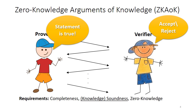Soundness means that if the statement is not true, then a prover will only be able to convince a verifier with negligible probability. In particular, knowledge soundness means that there exists a certain algorithm called the extractor, such that if we have a prover that can convince a verifier with a certain probability, then the extractor can extract a witness for the statement from the prover. Zero-knowledge intuitively means that the verifier does not learn anything from this interactive protocol beyond the fact that the statement is true. More concretely, we can construct an algorithm called a simulator that outputs transcripts distributed as in the interactive protocol, except that the simulator does not get access to the witness.